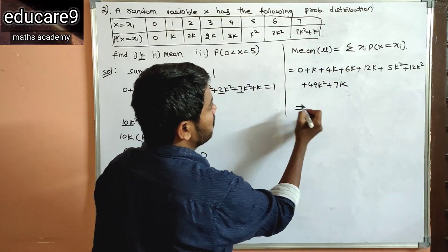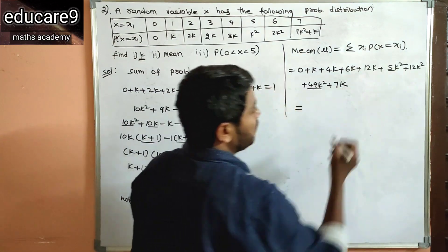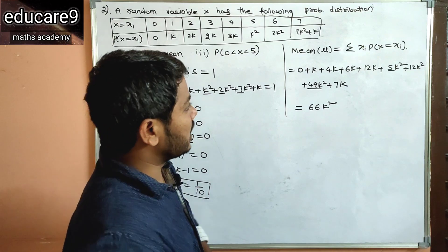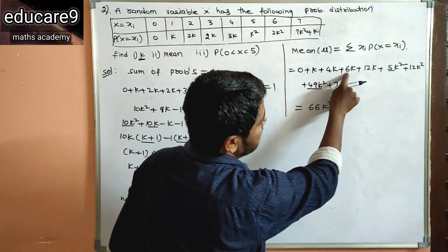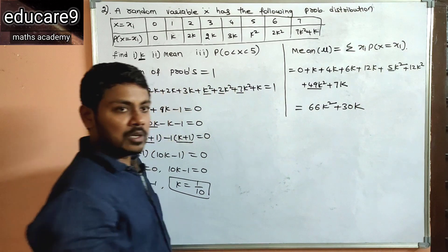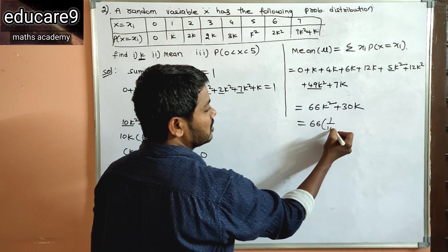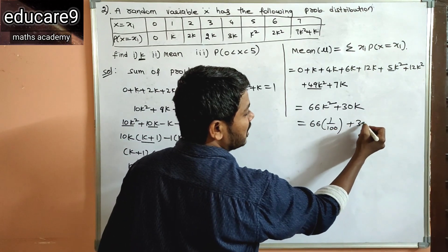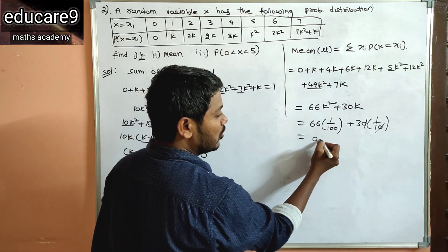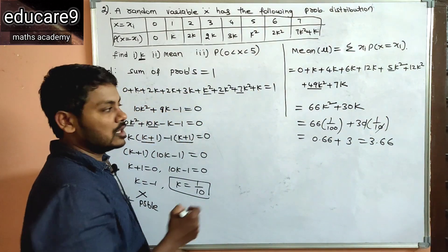Substituting K = 1/10: 66×(1/100) + 30×(1/10) = 0.66 + 3 = 3.66. So the mean is 3.66. Next, find P(0 < X < 5). The values of X strictly between 0 and 5 are 1, 2, 3, 4. So P(0 < X < 5) = P(X=1) + P(X=2) + P(X=3) + P(X=4) = K + 2K + 2K + 3K = 8K = 8/10 = 0.8.